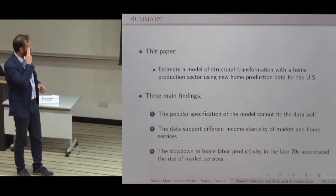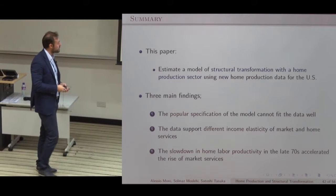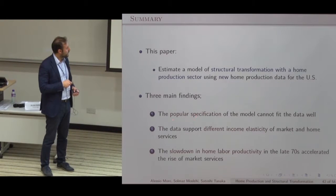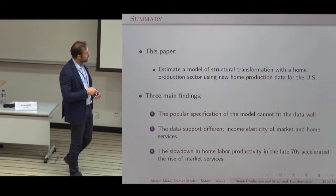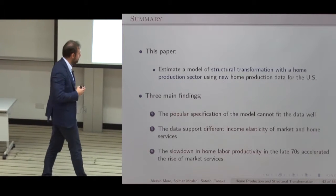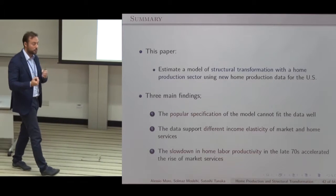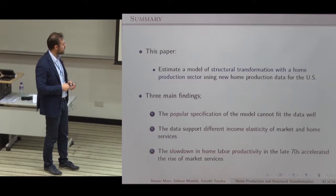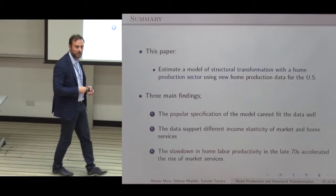To conclude: we estimate a structural transformation model with a home production sector exploiting new data. The main findings are: the popular specification cannot fit the data well; we propose differential non-homotheticity between home and market as an additional channel; the data support different income elasticities between the two types of services; and the slowdown in home labor productivity accelerated the rise of market services, though it is not the only determinant.